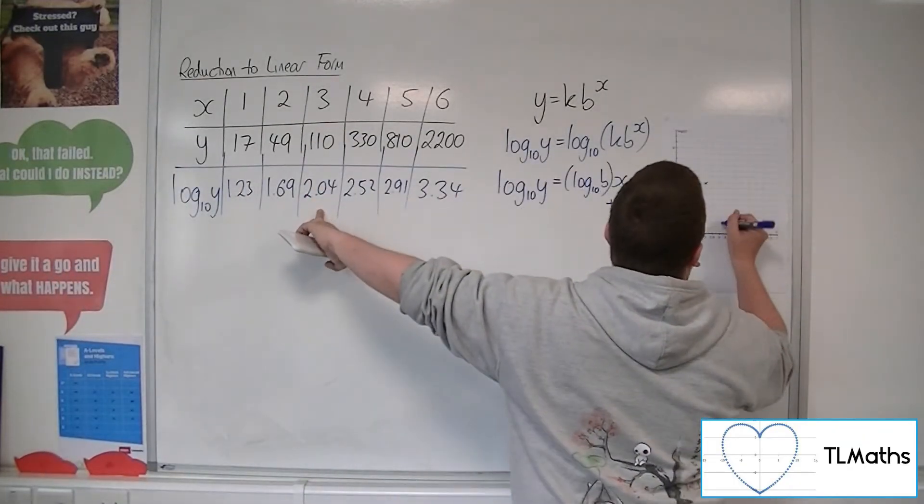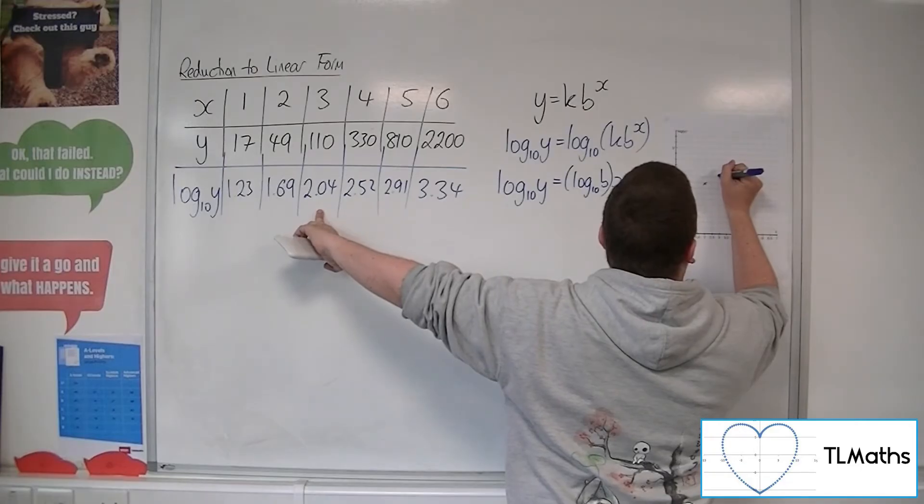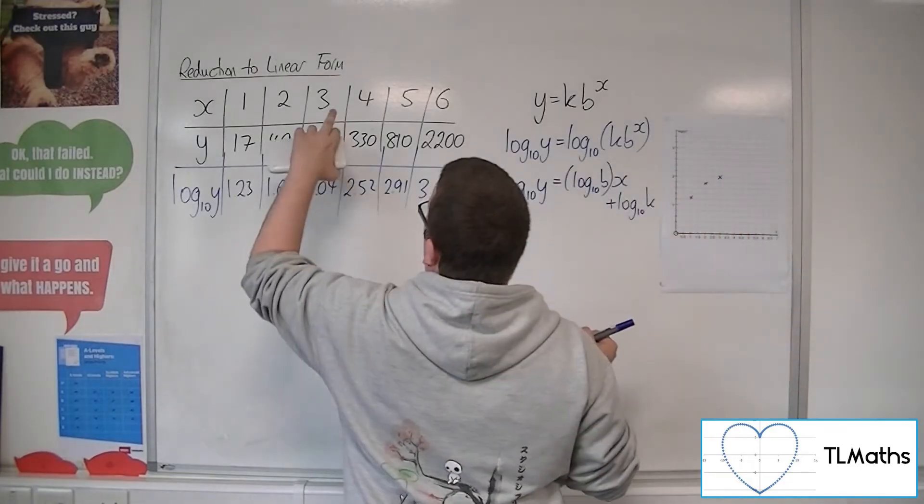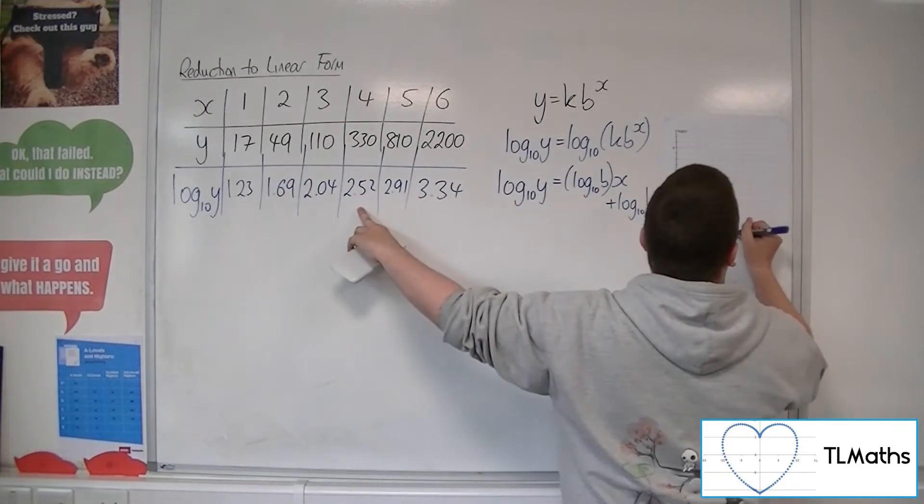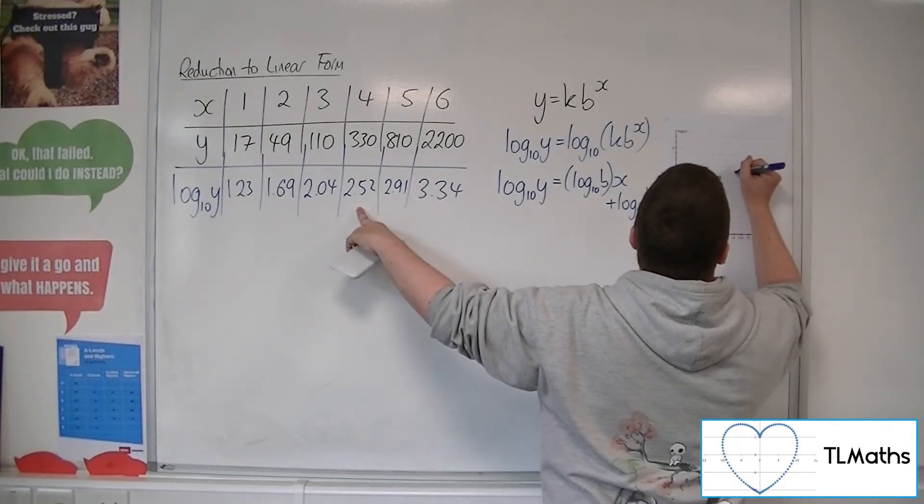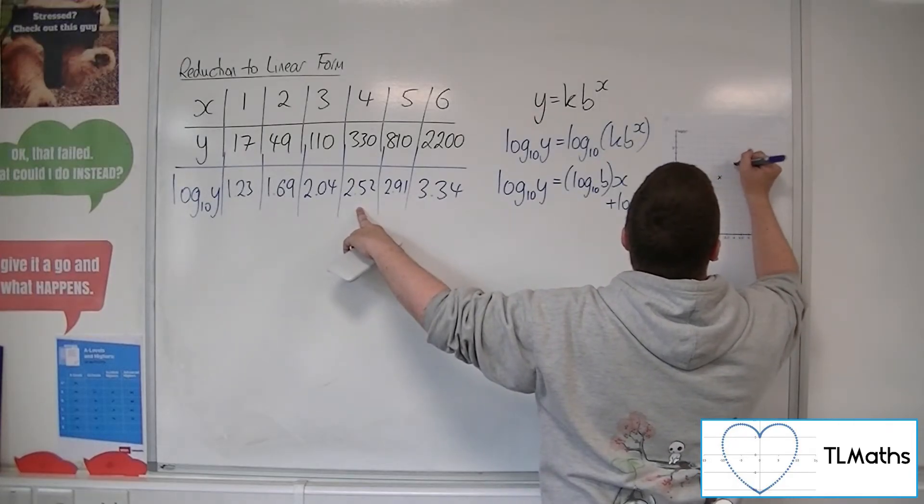3, 2.04. So that's about there. 4, 2.52. 2.52, something like that.